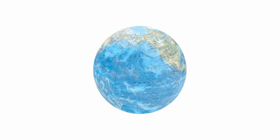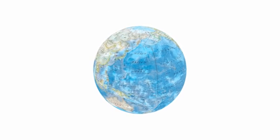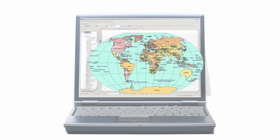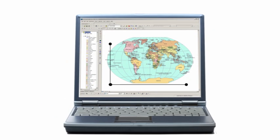Our planet is also a 3D object, a sphere. The problem is that most maps are in only two dimensions, length and width.